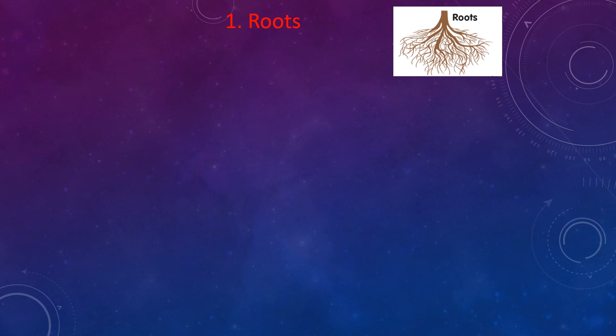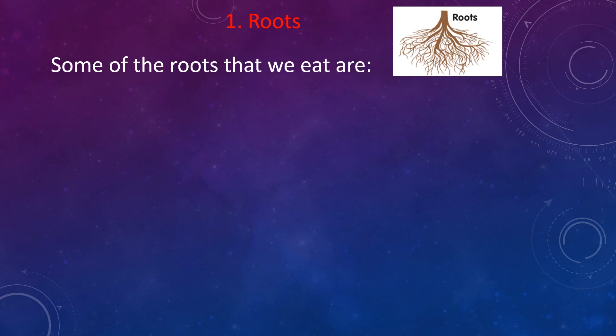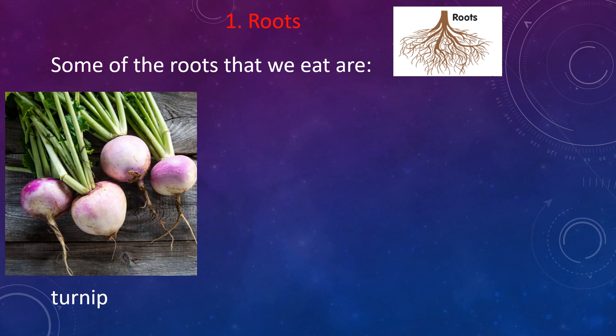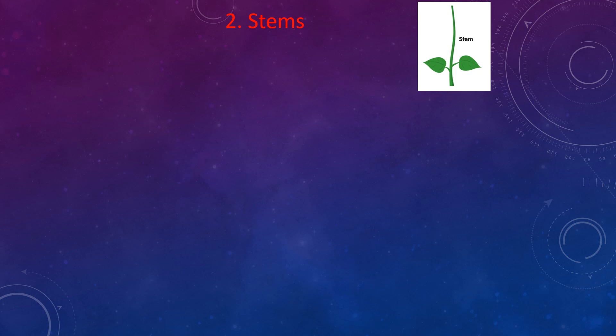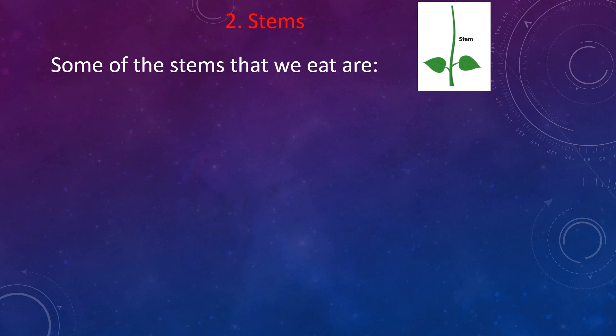Now let's see which are the roots that we eat. Some of the roots that we eat are turnip, radish, and carrot. So turnip, radish, and carrot are the roots that we eat.